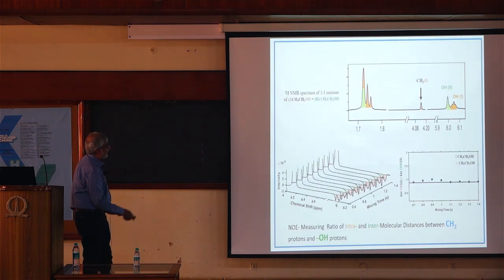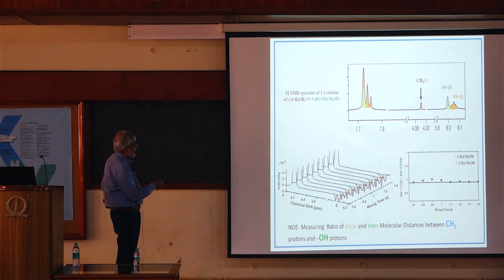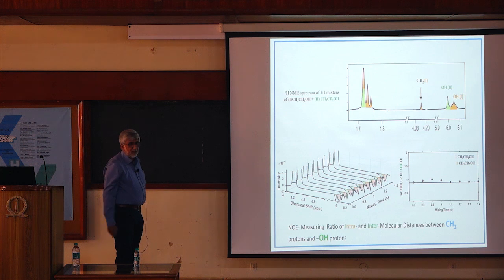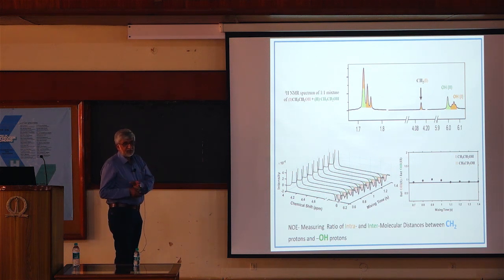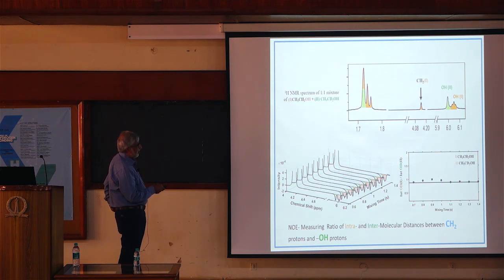In the one-to-one mixture, we selectively invert the methylene protons, which belong only to the normal ethanol (since the deuterated one is CD₂). We then look at the intensities of the two hydroxyl peaks — one attributed to the deuterated compound and one to the protonated compound — and observe how intensities change as a function of mixing time.